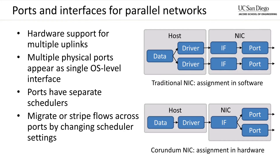In addition to the high-performance data path, Corundum also provides some unique architectural features that can support parallel networking. Namely, Corundum provides hardware support for multiple uplinks in a way that is transparent to the operating system and application software. In traditional NICs, each network interface at the operating system level corresponds to a single physical port on the NIC. Migrating flows from one port to another requires the operating system or application to enqueue packets from that flow on a different network interface, which means that this must necessarily be implemented in software.